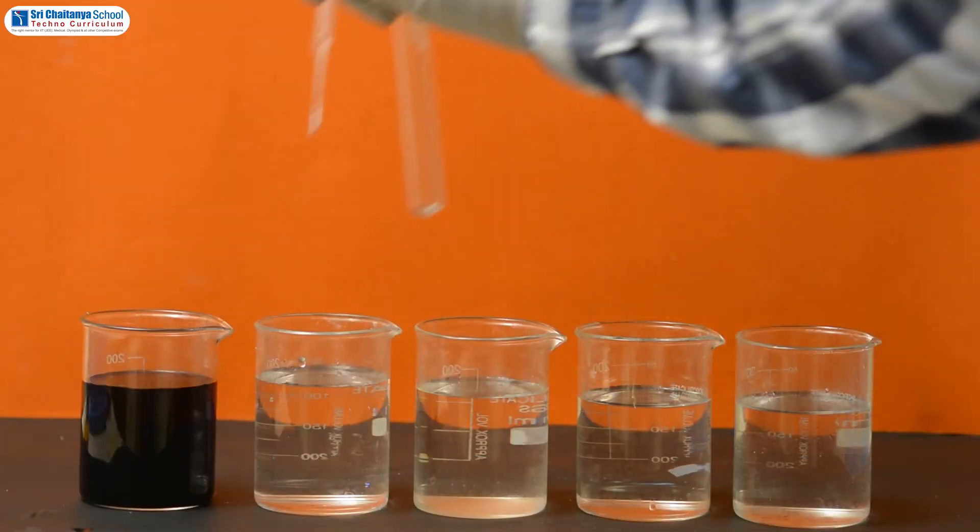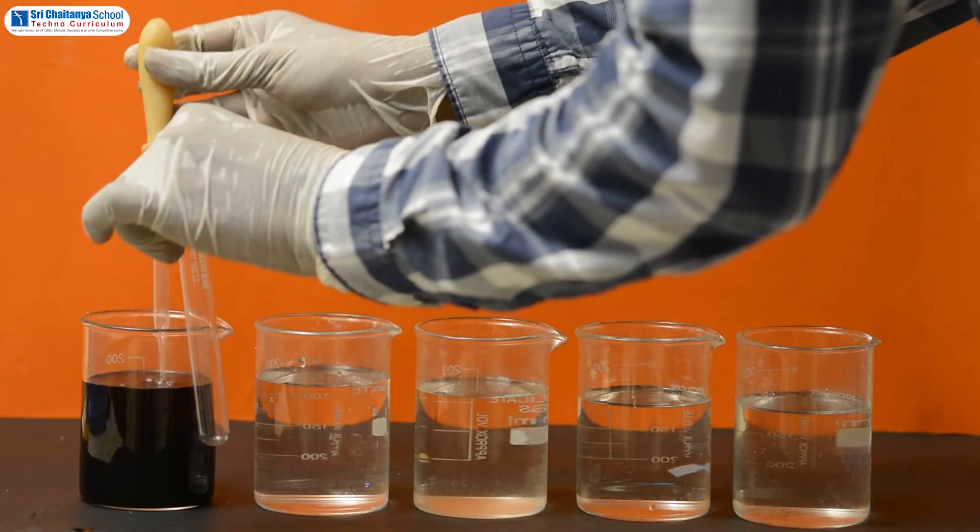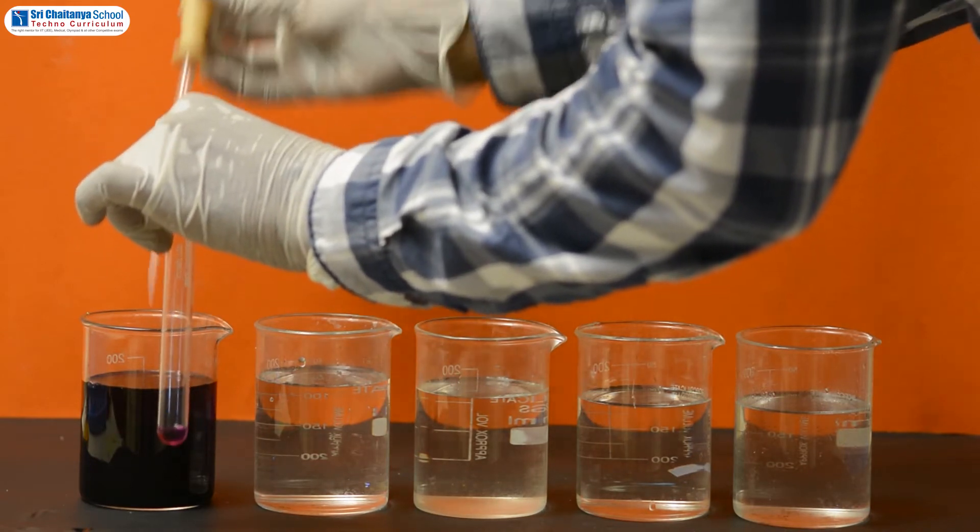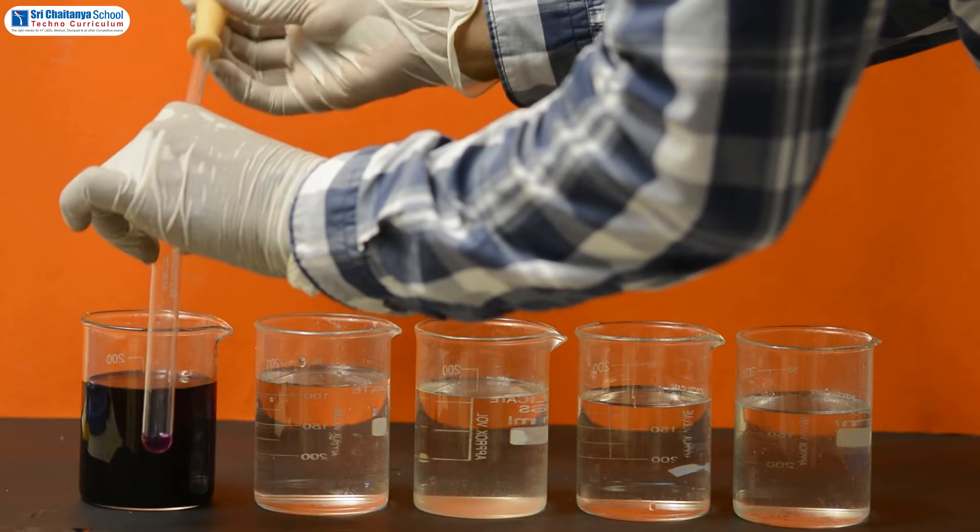Now take out approximately 10 ml of potassium permanganate solution and add it to 90 ml of clean water in another beaker.